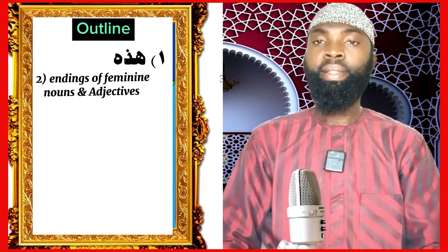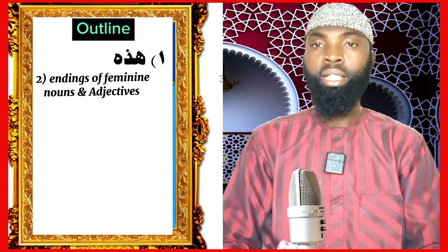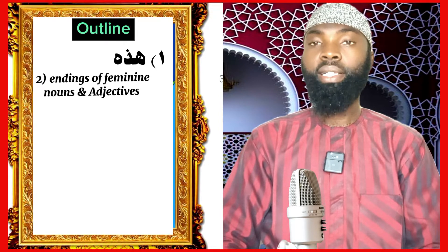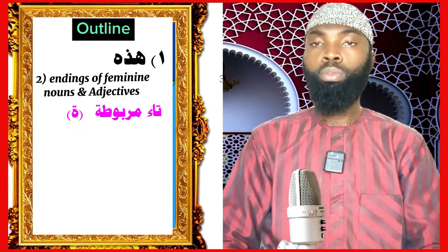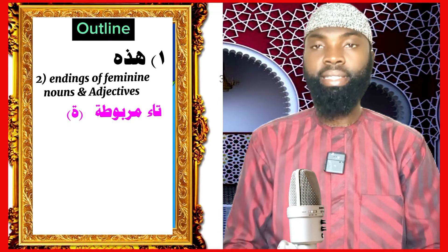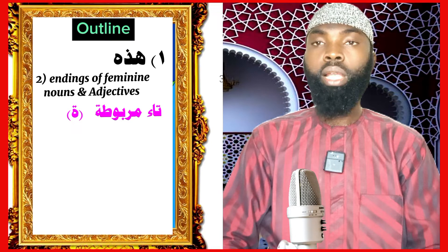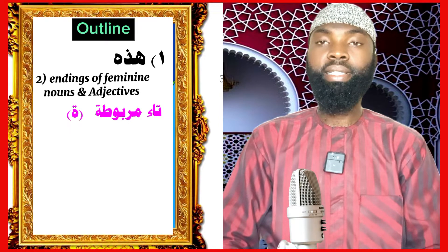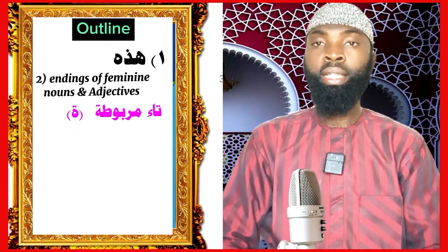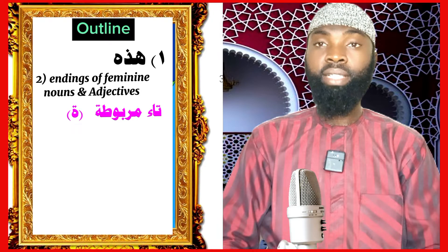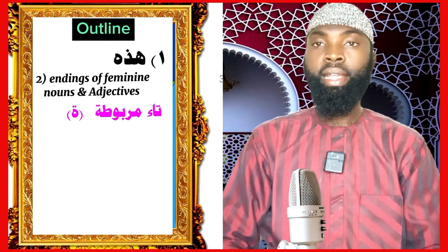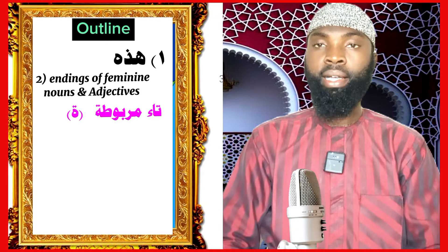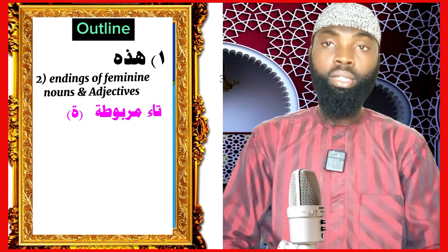Another thing we are going to learn in this lesson is the ta' marbuta ending — what ends feminine nouns and feminine adjectives. All feminine nouns and adjectives, with just a few exceptions, will end with ta' marbuta. For example, طَالِبٌ is a male student, while طَالِبَةٌ is a female student. The letter before the ta' marbuta will always carry a fatha as its vowel.